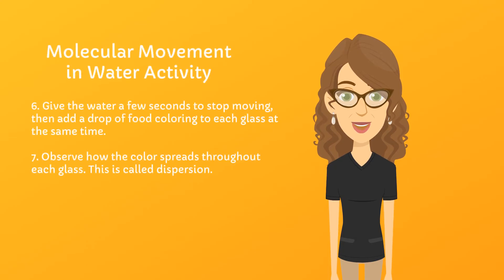It's important to give the water a few seconds to stop moving to get good results. When the water is still, add a drop of food coloring to each glass at the same time and observe how the color spreads. This is called dispersion. We're using red food coloring for the hot water and blue for the cold. Pause this lesson now if you want to see your own results before you watch ours.